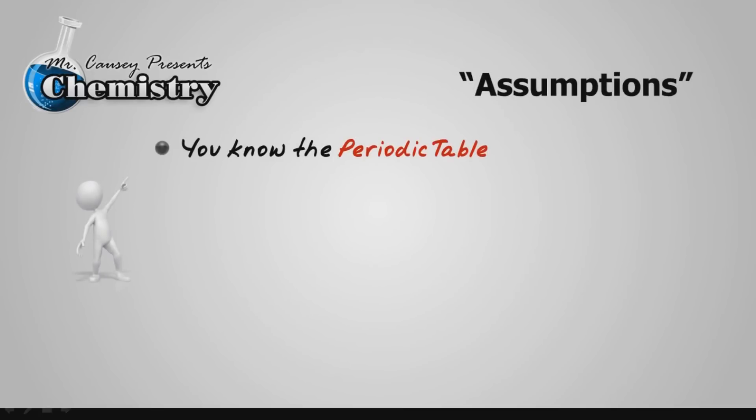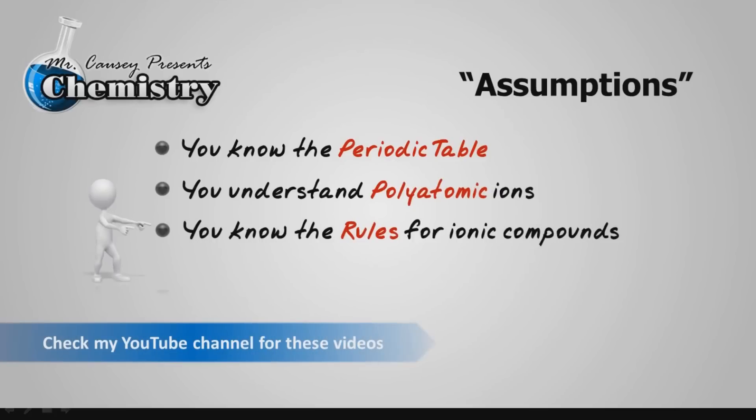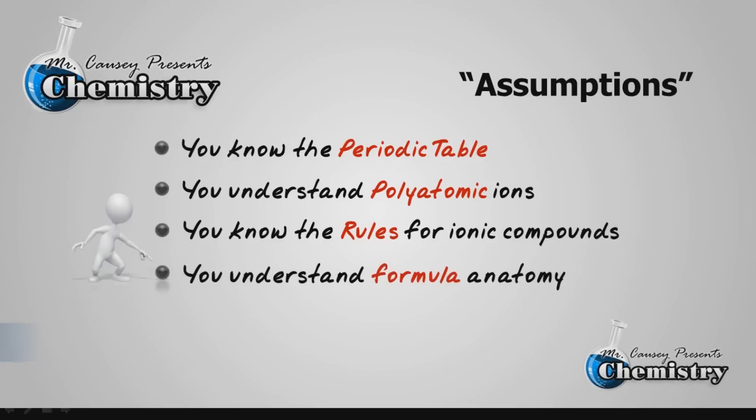First, I'm going to assume that you know the periodic table, then I'm going to assume that you understand polyatomic ions. I'm going to assume that you know the rules for ionic compounds, and I'm going to assume you understand the formula anatomy. And if you don't understand all of these, or you're not sure about them, then go to my channel and watch the videos dealing with these subjects.